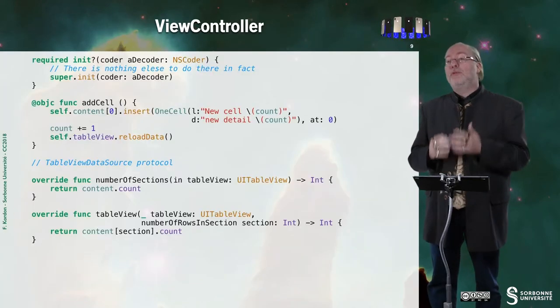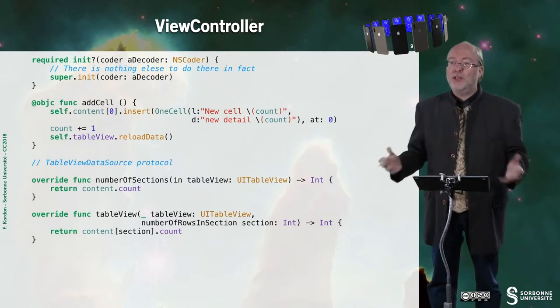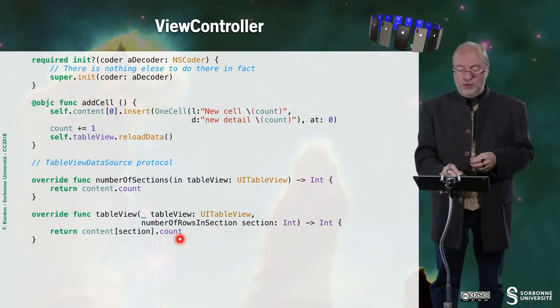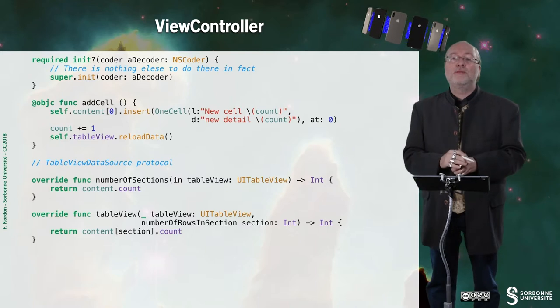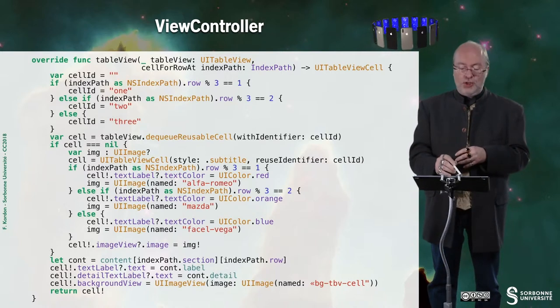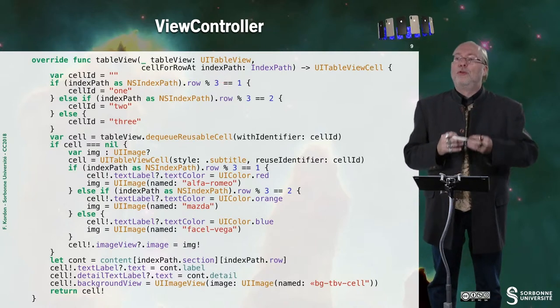I fill the UITableView data source protocol. First, I provide the number of sections — the size of the first dimension array. Then each element of the array of sections is itself an array of rows, so here I can get the number of rows for a given section. The index path is a couple: row number and section number.